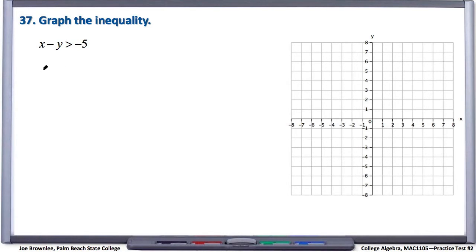And just like before with number 36, let's pretend that instead of an inequality, we were given an equal sign, so x minus y equals negative 5.